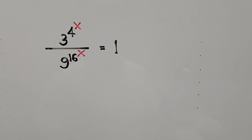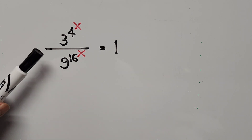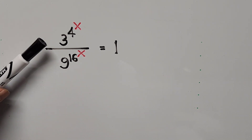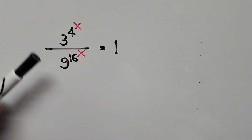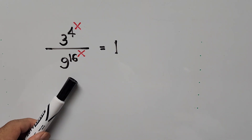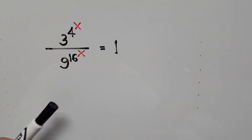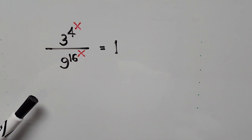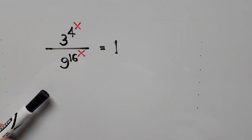Hello everyone! We have here an exponential equation: 3 to the power of 4 to the power of x, divided by 9 to the power of 16 to the power of x, equals 1. In this video we'll be solving for the values of x.